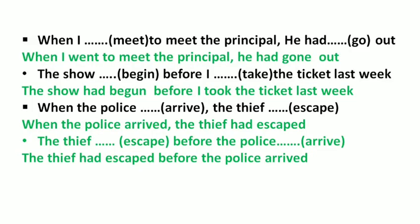Example: 'When I went to meet the principal, he had gone out.' Think about which action happened first. The principal had already left the office, so 'he had gone out' is the first action in past perfect. My going to meet him came later, so that is in simple past.